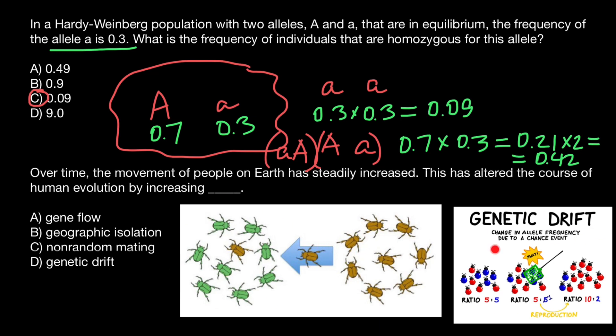And genetic drift is usually a gradual process when frequencies of the alleles in the population change due to different fitness of the different phenotypes. As you see, our choice is variant A, migration increases gene flow in populations.